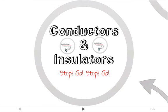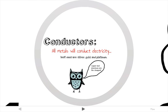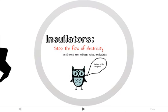All metals conduct electricity, but the best ones are silver, gold, and platinum. Copper and aluminum are the least expensive. Insulators are materials that virtually stop the flow of electricity. Glass, mica, and rubber are good insulators.